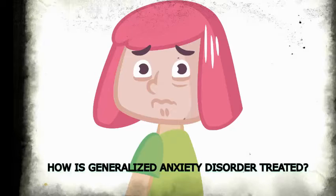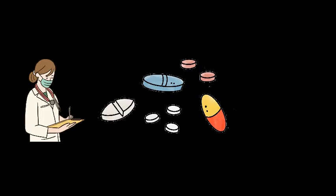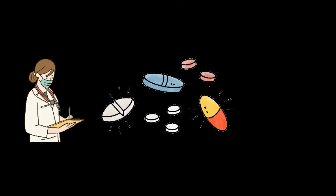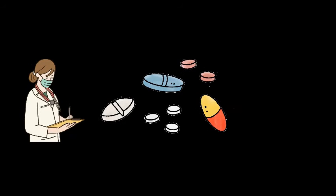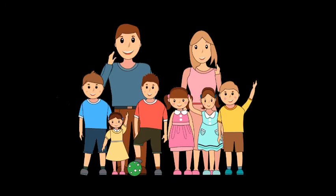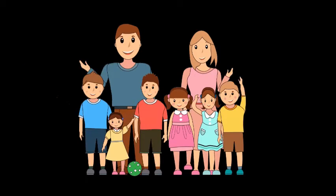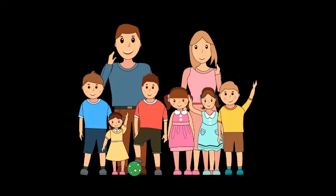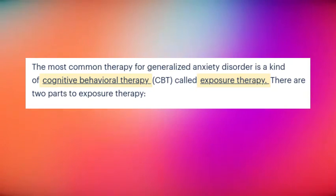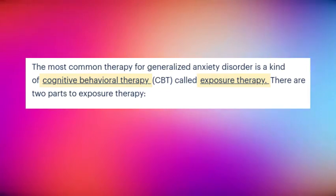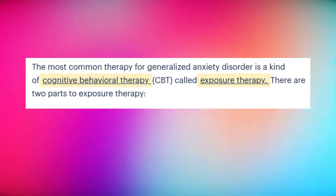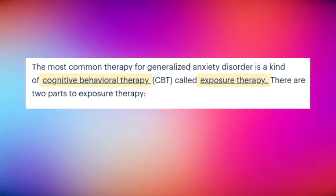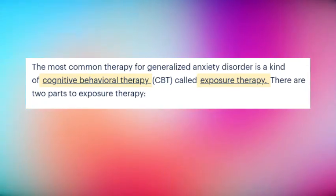How is Generalized Anxiety Disorder treated? Generalized Anxiety Disorder is usually treated with therapy or a combination of therapy and medication. Parents and other family members are an important part of treatment, since they can help kids practice the skills they learn in therapy. The most common therapy for Generalized Anxiety Disorder is a kind of Cognitive Behavioral Therapy, CBT, called exposure therapy.